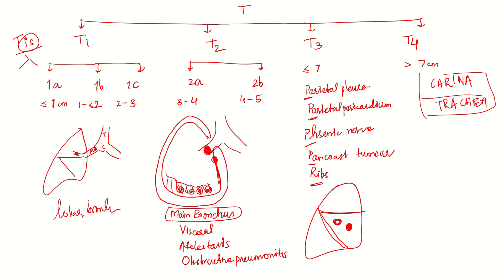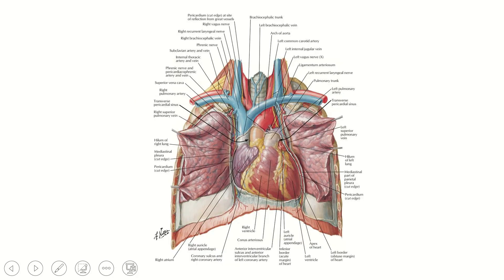I'll show you an image to remember this easily. So this is the image of the mediastinum and thorax. Coming to T1, there is involvement of lobar bronchus. T2 is involvement of the main bronchus. Trachea is behind these great vessels. Involvement of this main bronchus.